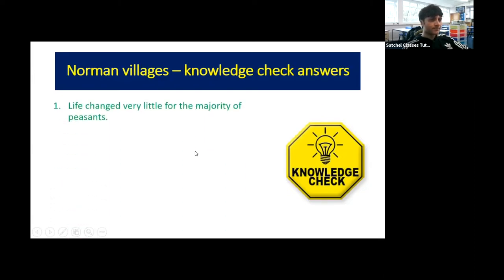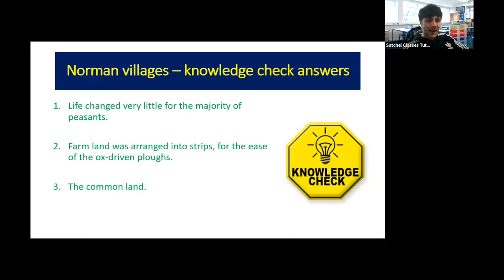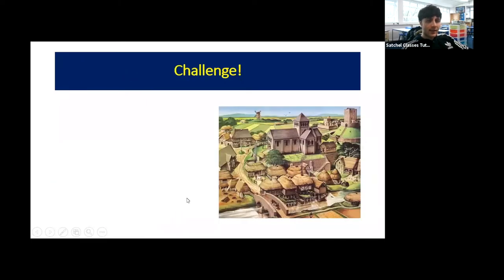Checking the answers: life changed very little for the majority of peasants — the patterns of work and strip farming were pretty similar from the Anglo-Saxon to the Norman period. They now had French lords instead of Anglo-Saxon ones, but the relationship was broadly similar. The farmland was arranged into strips for ease of the ox-driven plows. The animals grazed on the common land. The crops likely grown were wheat, oats, barley, and rye.